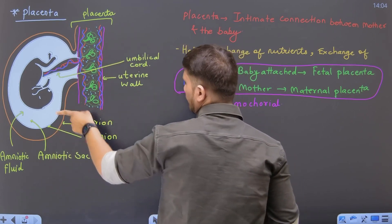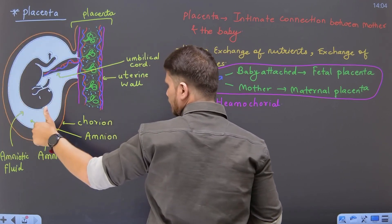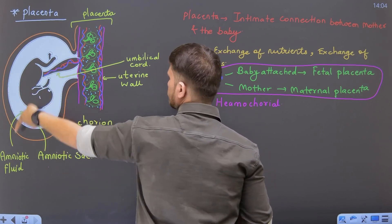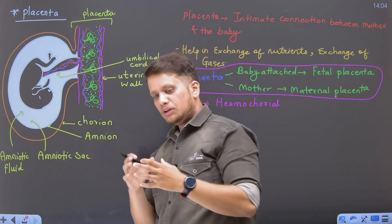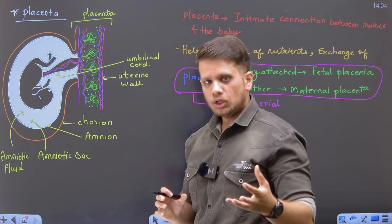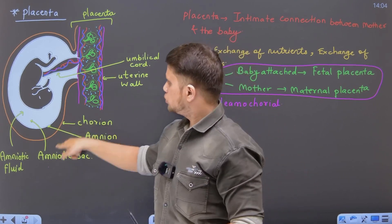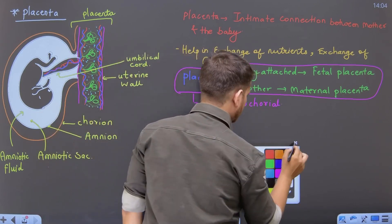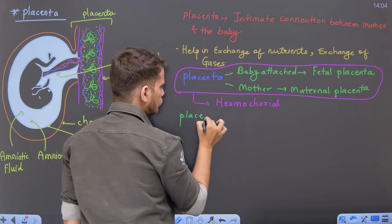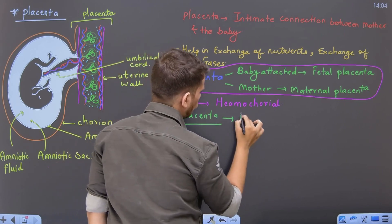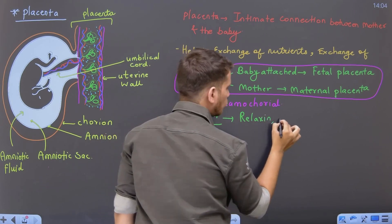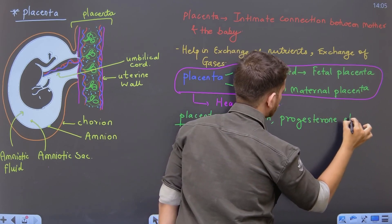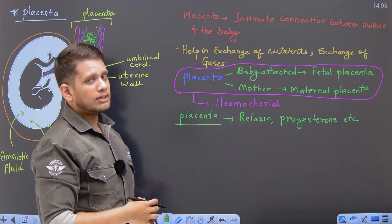Apart from that, yaha pe placenta ke saath-saath, baby jis thaili mein rahata hai, jis bag mein rahata hai, usko bolenge amniotic sac, aur is amniotic sac mein there is a fluid which is called as amniotic fluid. This amniotic fluid will make sure that the baby does not dry out. Placenta also releases certain hormones, like there can be a hormone called relaxin, there can be hormone called progesterone, there can be hormone called estrogen, and so on and so forth.